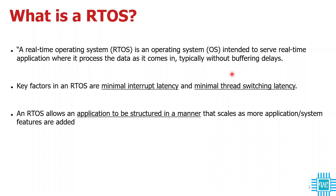The key factors in RTOS are minimal interrupt latency — that means it should process interrupts in very little time — and also minimum thread switching latency. In an RTOS, thread switching means it will switch execution from one task to another task, and that should be very minimal, whether it's a TI RTOS or a FreeRTOS. This is one of the key factors an RTOS should provide to an application developer.